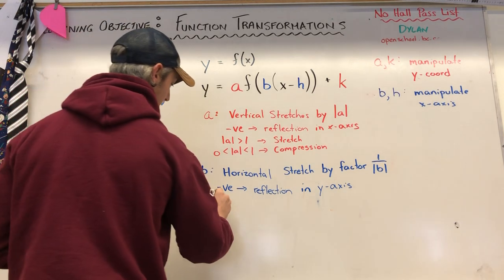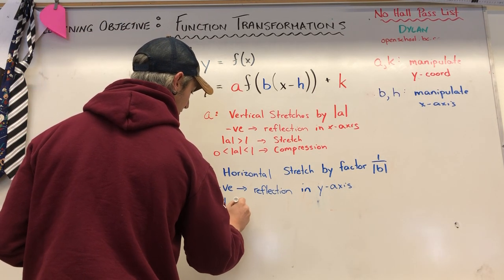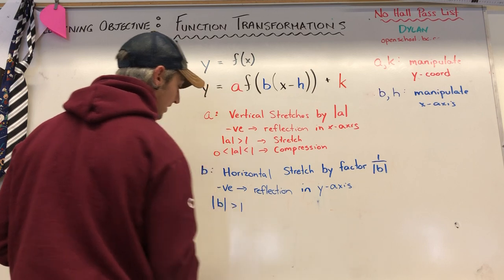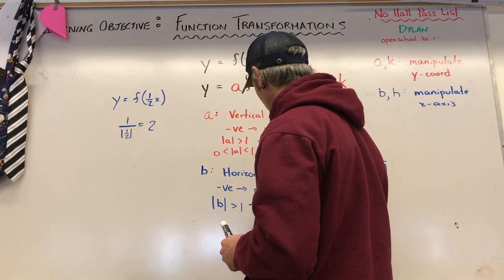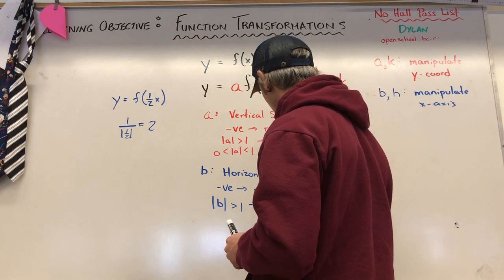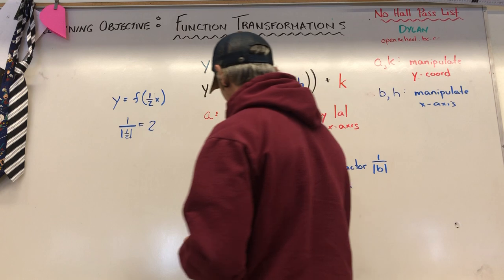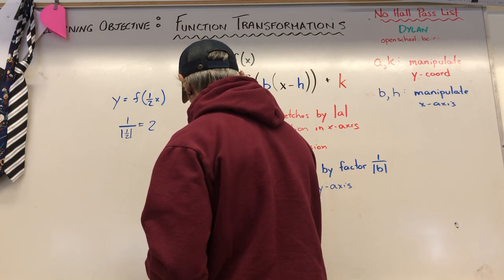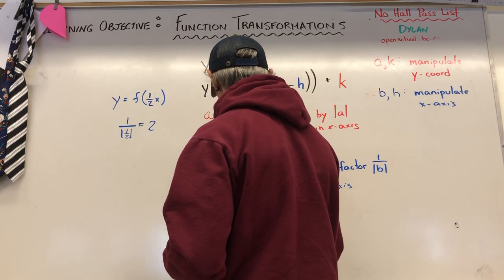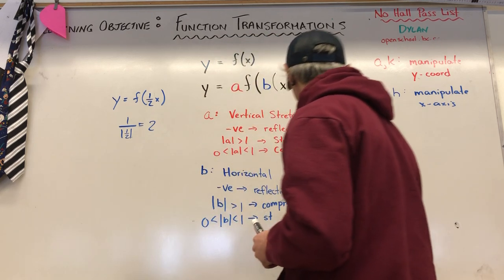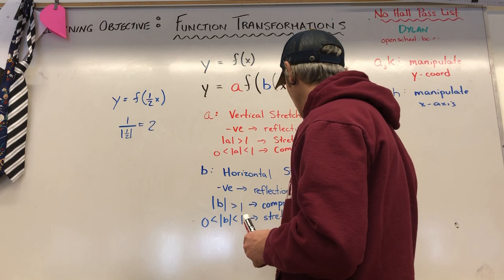If the absolute value of b is greater than one, we get the opposite of what 'a' does — we get a compression along the x-axis. And if b is a fraction, then one divided by that fraction leads to a stretch.